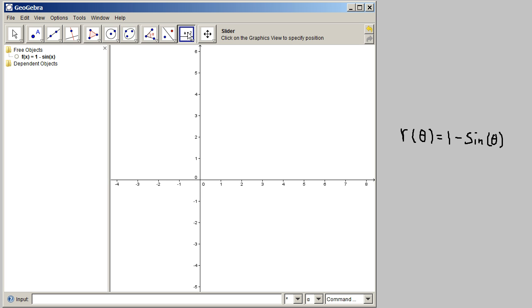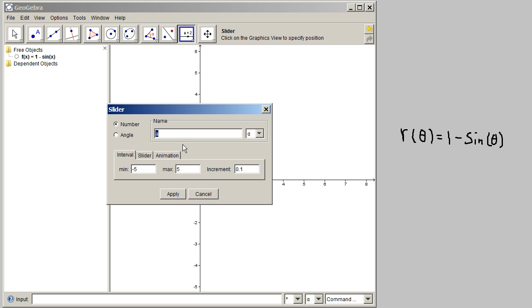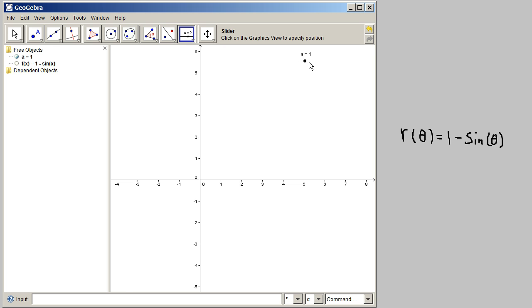The next thing I'm going to do is click on the slider and create a slider that will go from 0 to 2 times pi. And I'll make it go in increments of pi over 100. Okay, so now we have that in place.